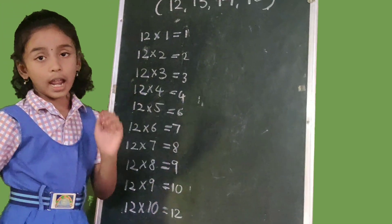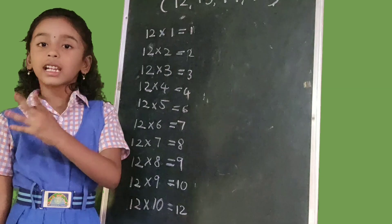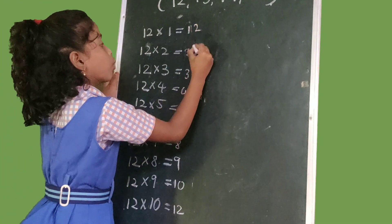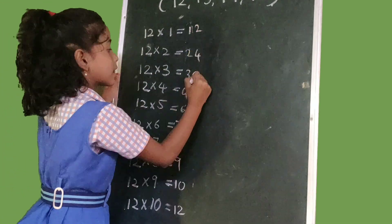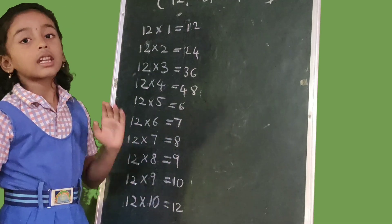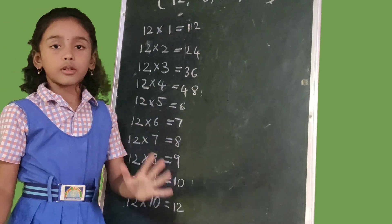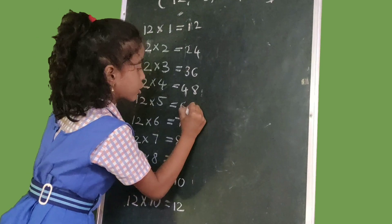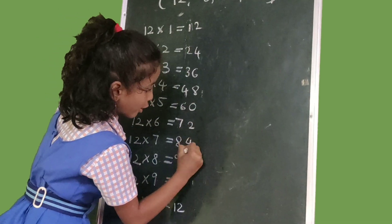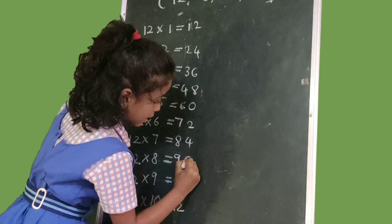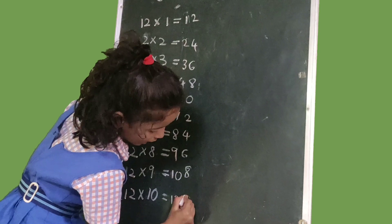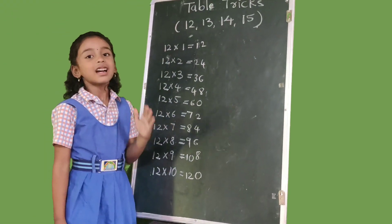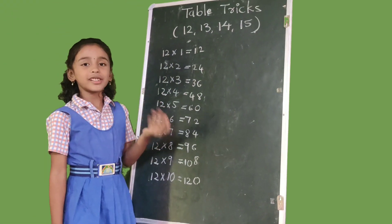Now we write 2 to 8 even numbers: 2, 4, 6, 8. Now we write 0 to 8 even numbers: 2, 4, 6, 8 and we write 0. Friends, this is the 12 table trick.